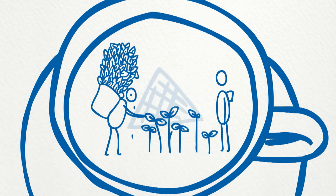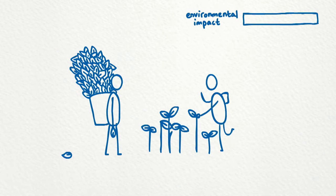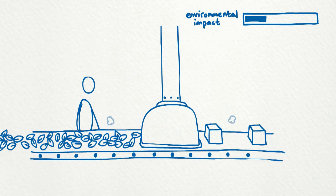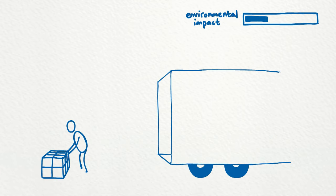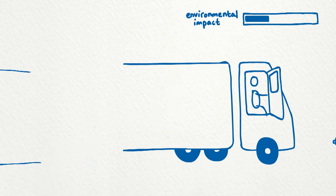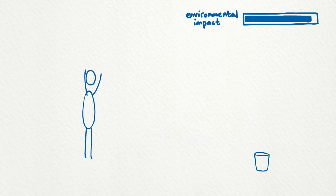It works like this. First we get the raw materials, then we make them into a product and deliver it to a shop. Then our consumers buy it, use it and eventually throw it away.